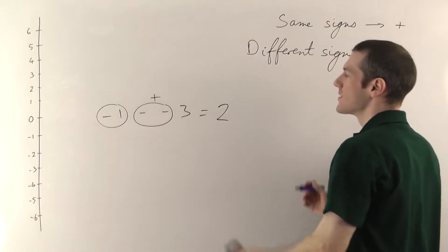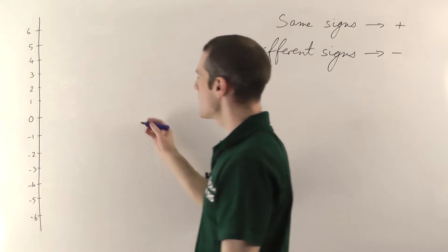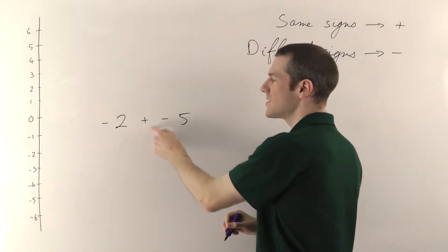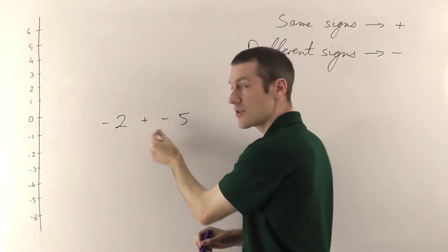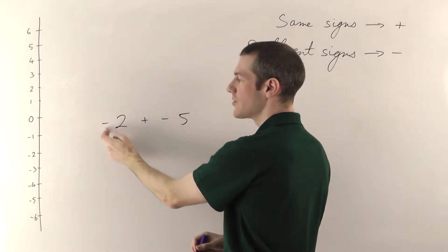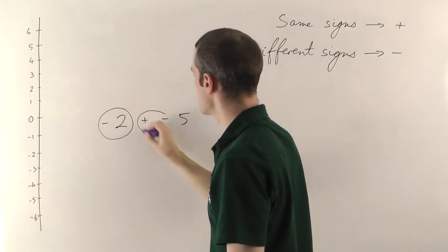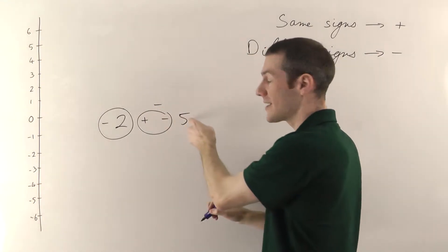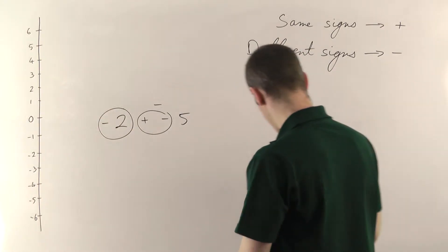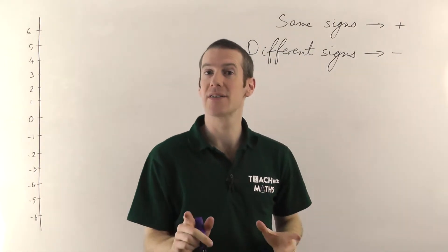To reiterate the key point: you can end up with a lot of different signs. If you ever see two next to each other with nothing in between, combine them using the rule. However, if they're separated by a number, you can't do anything with it — that sign attaches to the thing on the right and becomes a minus sign attached to the five. So it's minus two minus five; then go down on your number line and work it out.